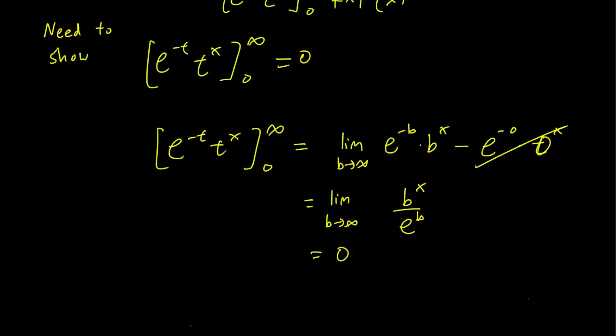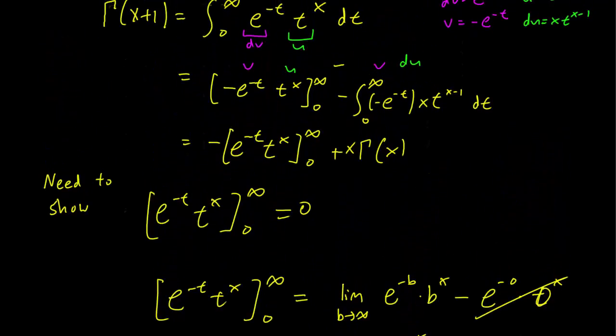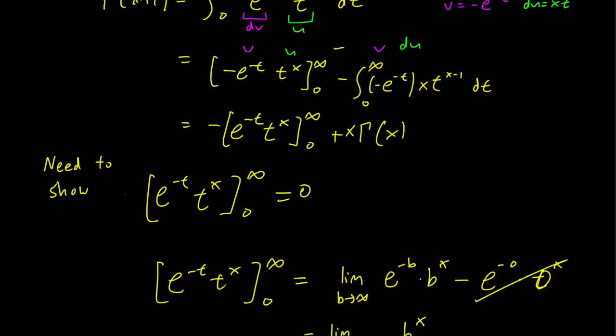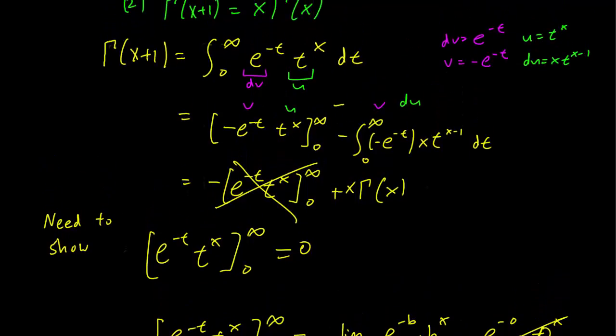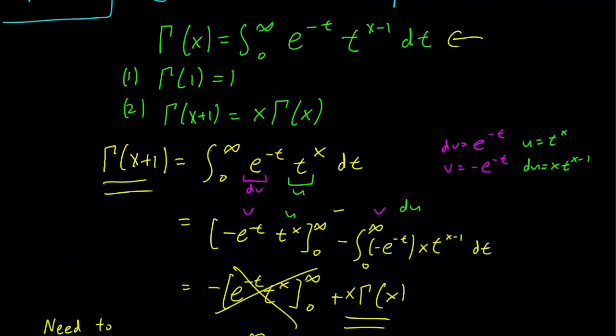But this implies that we have this term becoming equal to 0. And so indeed, gamma x plus 1 is equal to x gamma x just like we wanted. That's it.